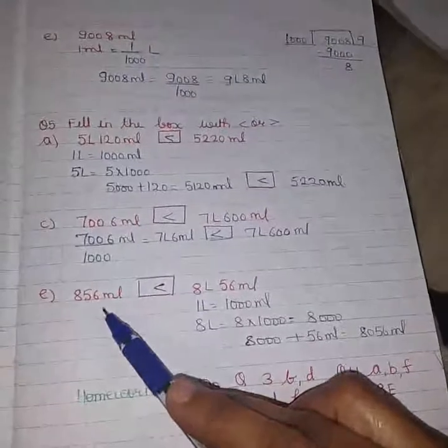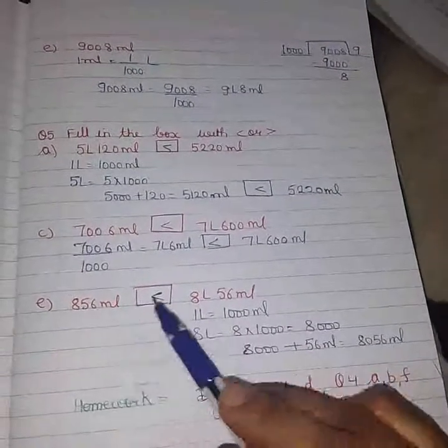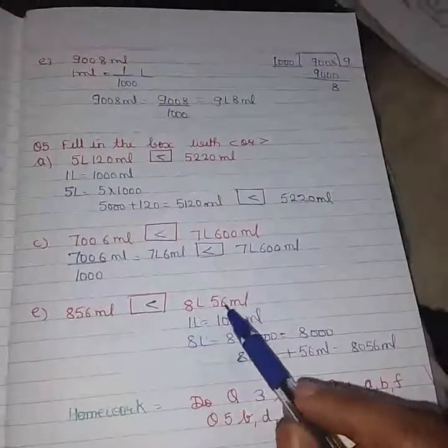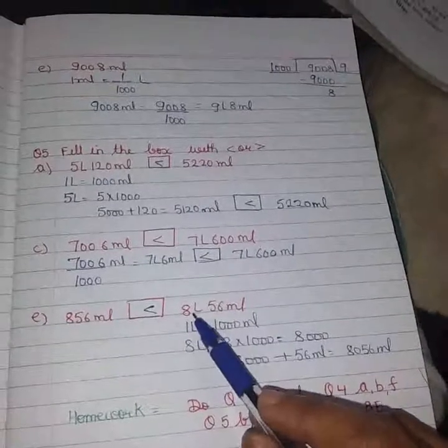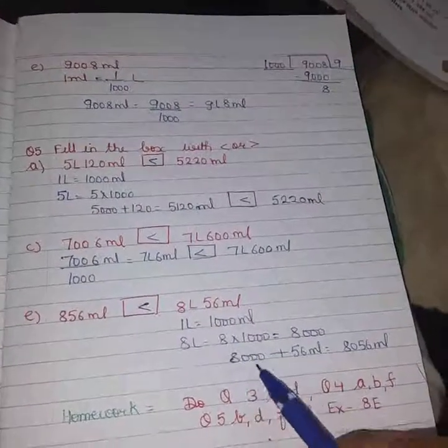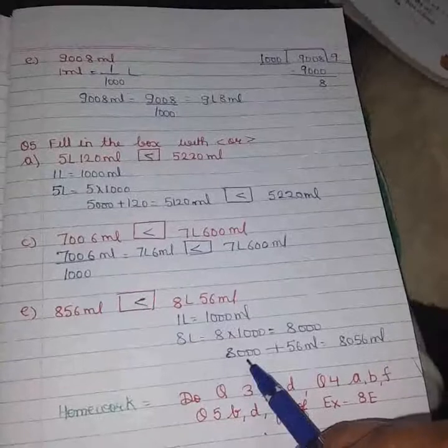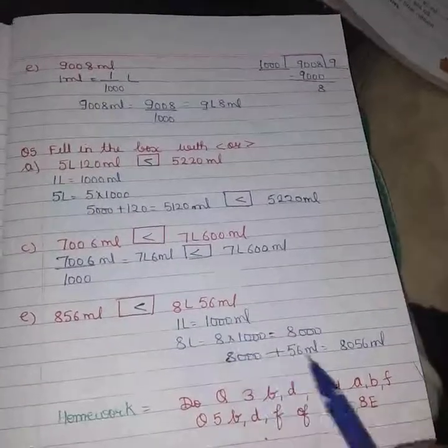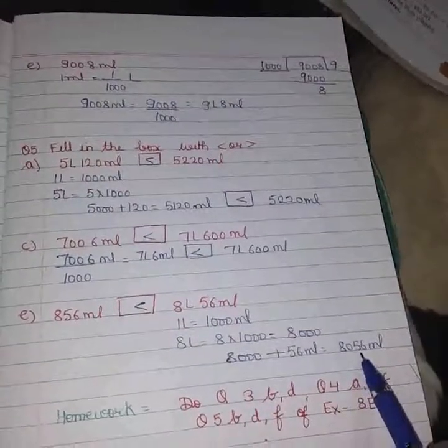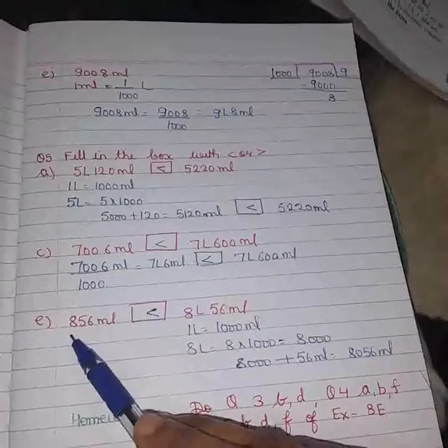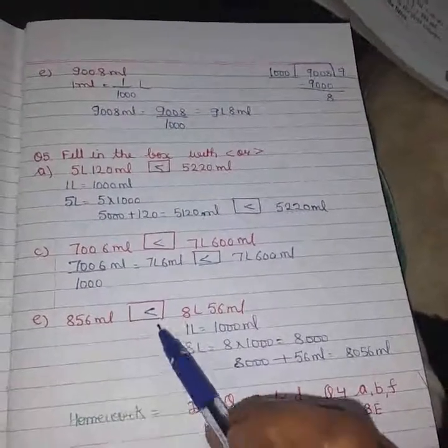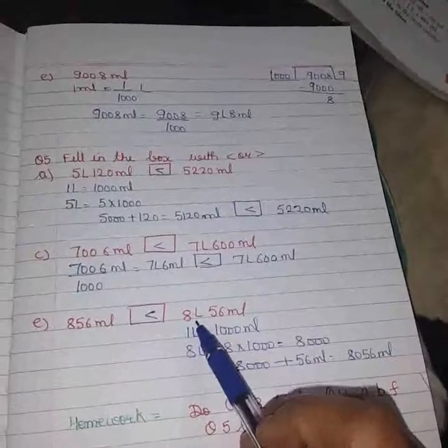Last one is 856 ml and 8 liters 56 ml. After converting 8 liters to ml it will become 8000 ml plus 56, then 8056. So 8056 and here it is 856. Yes, 8056 is greater than 856.